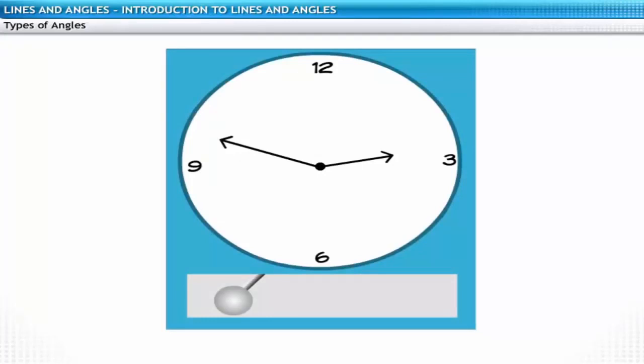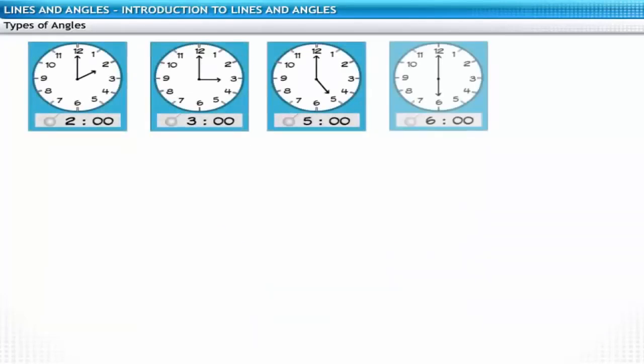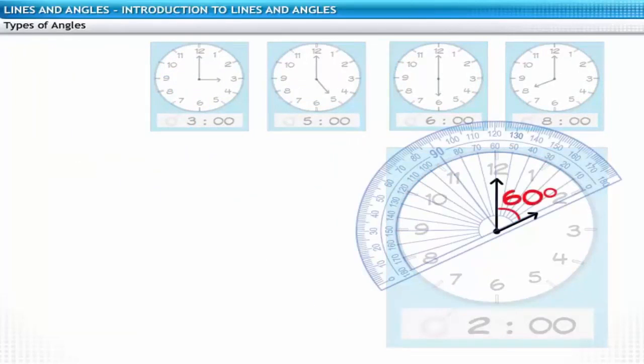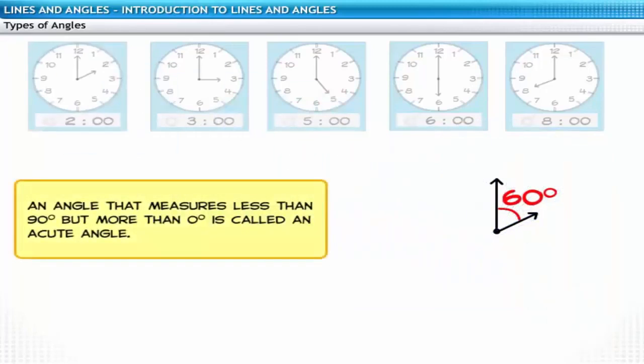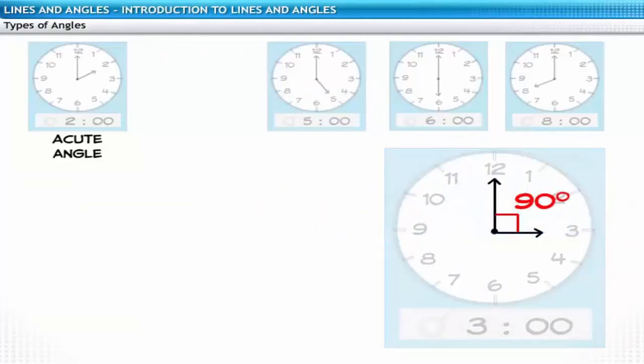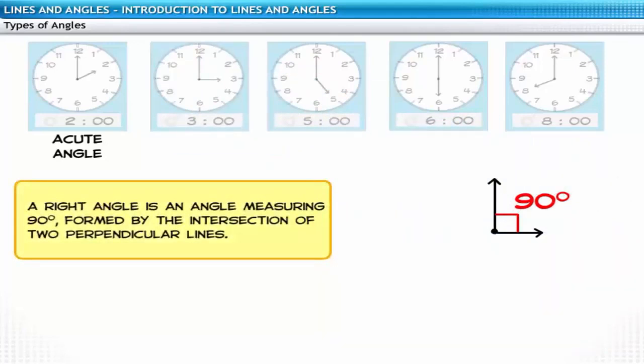First, let's quickly review our understanding of the different types of angles based on their measures. We will use a clock for this activity. Let's assume the two hands of the clock represent two rays. Now, let's note down the measure of angles at different times. At 2 p.m. the angle formed is 60 degrees. An angle that measures less than 90 degrees but more than 0 degrees is called an acute angle. When it is 3 o'clock, the rays form a 90 degree angle. A right angle is an angle measuring 90 degrees.